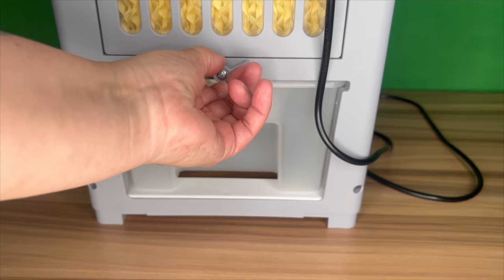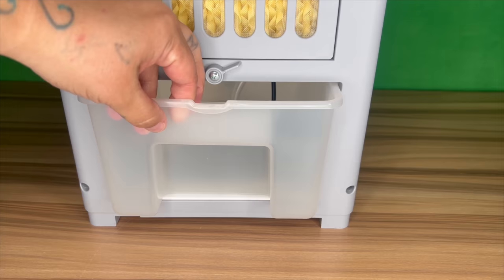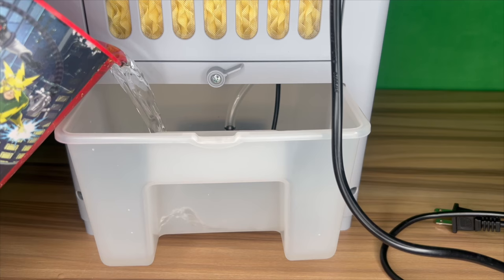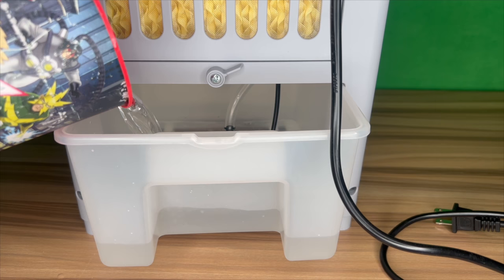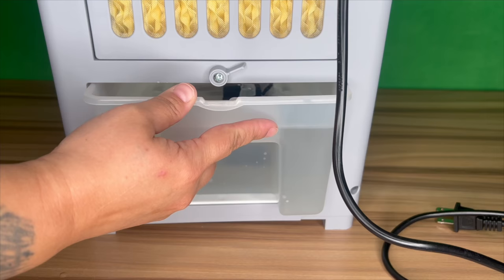Now let's get to the water reservoir. We're going to unlock this, pull this out a bit, we're going to fill it up with some water. This holds up to one gallon of water, so you don't have to keep going back and forth putting more water. I had this run last night, it lasted me I think all night, keeping it nice and cool. Once you're done filling it up, you just put it back in there, flip this little switch to the bottom to lock it in place.